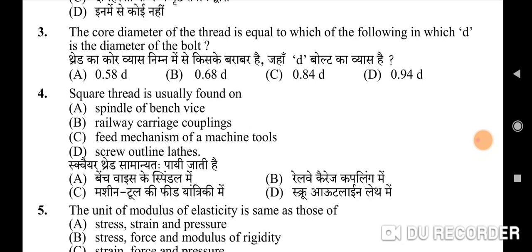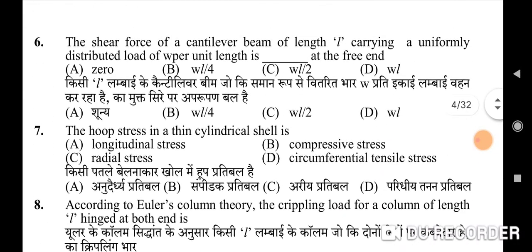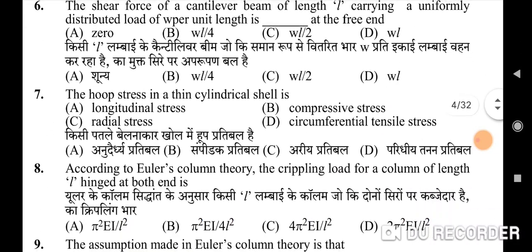Fourth question: square thread is usually found on — correct option is C: feed mechanism of machine tools. Fifth question: the unit of modulus of elasticity is the same as those of — correct option is D: stress, pressure, and modulus of rigidity.